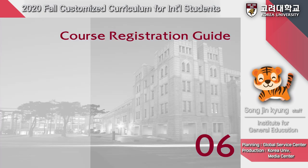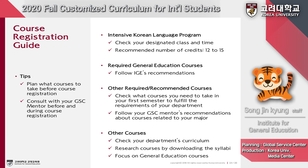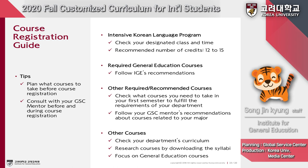Finally, for the course registration guide: if you are in the intensive Korean language program, check your designated class and time in the email sent on August 11th. We recommend taking 12 to 15 credits in regular courses this semester while focusing on improving Korean language proficiency. For required and other recommended courses, do not remove Freshman Seminar 2 and Computational Thinking, which will be automatically registered this semester, and check what courses you need to fulfill your department's requirements. This concludes the presentation — thank you for listening.